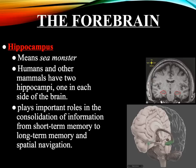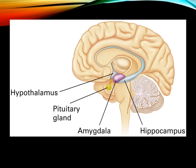The hippocampus consists of two little pea pod-looking structures found in both hemispheres of the brain. It literally means sea monster in Latin. Humans and other mammals have two hippocampi, one in each hemisphere. The hippocampus plays an important role in the consolidation of information from short-term memory to long-term memory, and for spatial navigation. What you need to be aware of is that the hippocampus is vital to our long-term memory.